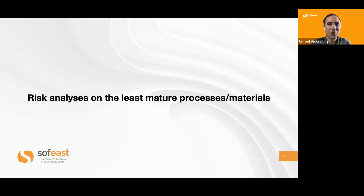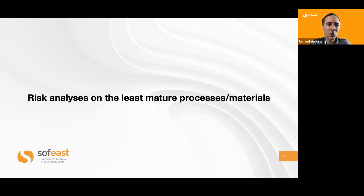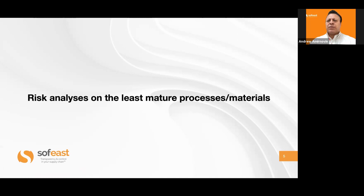The next topic is to start thinking about the processes that will be used in production and the materials that will be used — especially the least mature processes, the ones most likely to cause issues. Make a list of the associated risks and think about how to address that. A lot of these have to do with brand new materials that are custom to your design, or processes that are customized and no one else has done in the industry. So you're doing it for the first time — those are the high-risk elements in your design that you need to pay attention to.